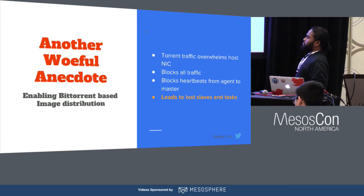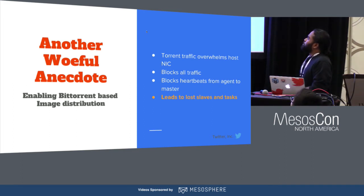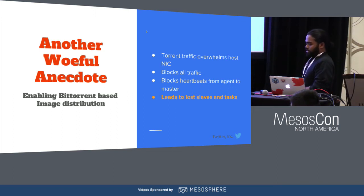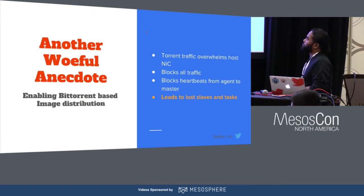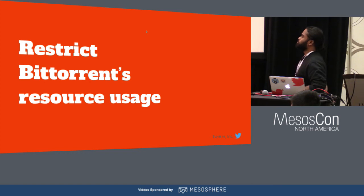So we built it, started distributing our first image, and had a bad situation. What happened was the torrent traffic ended up overwhelming the host NICs and blocked all traffic going off the host, which also blocked the heartbeats from the agent to the master, leading to lost slaves and lost tasks. So we had to restrict the resource usage of BitTorrent peers.